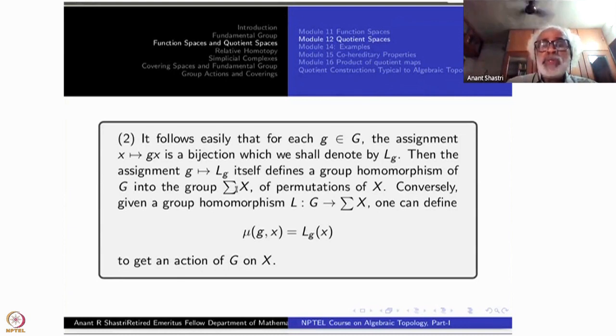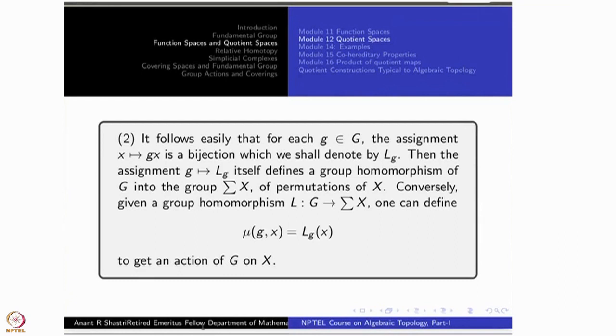What you get is for each G, the assignment G going to LG defines a map from G into the permutation group Sigma X. This itself is a group homomorphism because of the associativity. LG composite LH is L of GH. Conversely, suppose you have such a group homomorphism. Then there is a one-to-one correspondence between actions and group homomorphisms from G into permutation group of X.